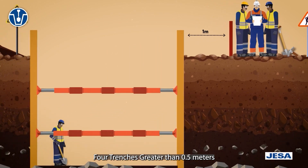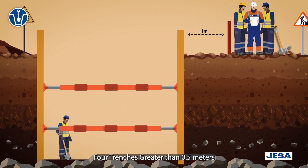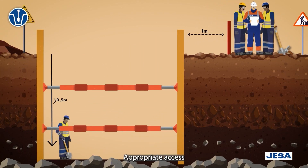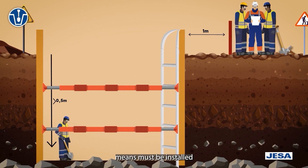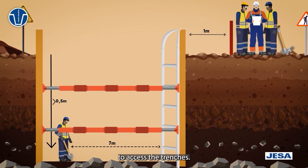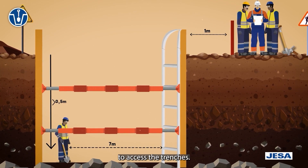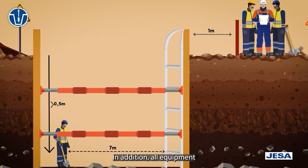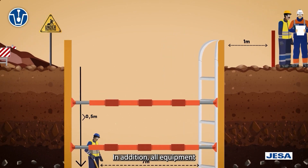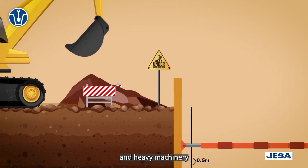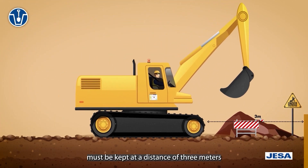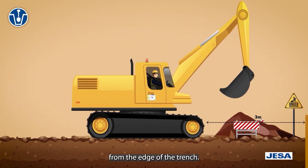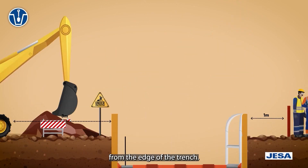For trenches greater than 0.5 meters in depth, appropriate access and exit means must be installed. In addition, all equipment and heavy machinery must be kept at a distance of three meters from the edge of the trench.